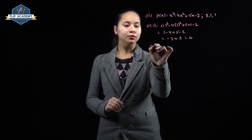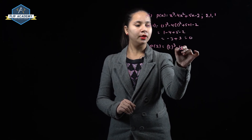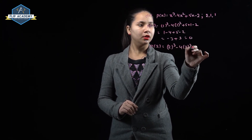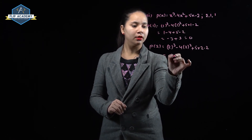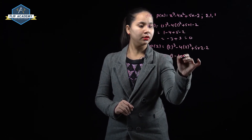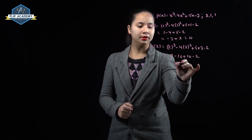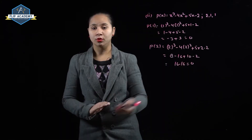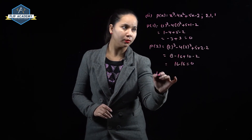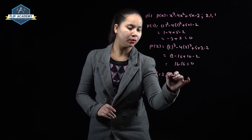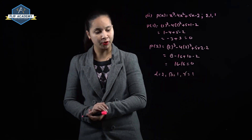p(2) = 2³ - 4×2² + 5×2 - 2 = 8 - 16 + 10 - 2 = 16 - 16 = 0. So 2 is also a zero of this polynomial. Therefore α = 2, β = 1, and γ = 1 are the zeros of this polynomial.